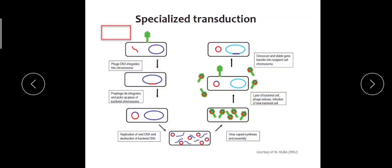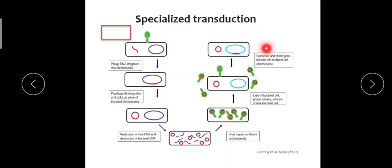When these bacteriophages are released, at a certain point they come to interact with another bacterium — the second bacterium. The bacteriophage attaches to the bacterial cell and inserts its DNA into the second bacterium's cytoplasm. Recombination occurs between the homologous portions — that is, of the first bacterium and this second bacterium — and as a result, the segment from the first bacterium's DNA gets integrated into the chromosome of the second bacterium.